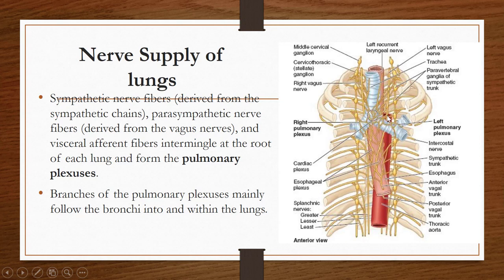The vagus nerve gives parasympathetic nerve fibers, and there are also visceral efferent fibers. These sympathetic fibers, parasympathetic fibers, and visceral efferent fibers intermingle at the root of each lung and form the pulmonary plexus. This pulmonary plexus is present at the hilum of the lung. Branches from the pulmonary plexus mainly follow the bronchi into and within the lungs to supply them.